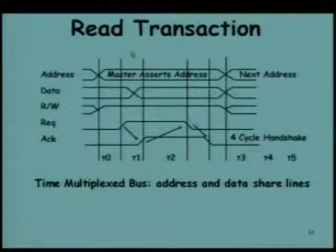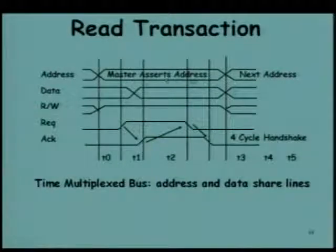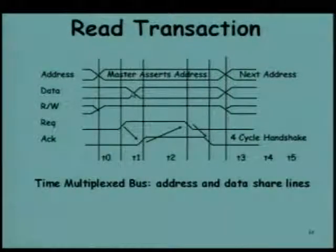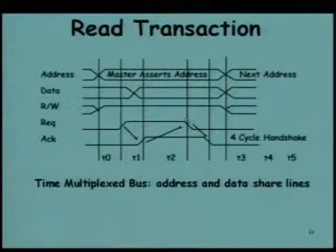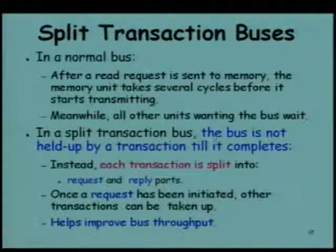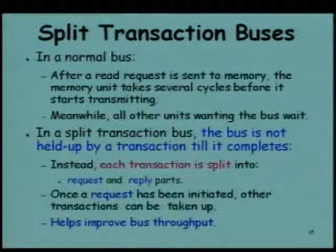In an asynchronous read transaction, the master gives the address and the read request; the slave puts the data on the bus with handshaking, and similarly for the completion of the read. This results in a 4-cycle handshaking. Those timing diagrams are contents of a first-level course, but you should be familiar with the timing diagrams for read and write in both synchronous and asynchronous buses.